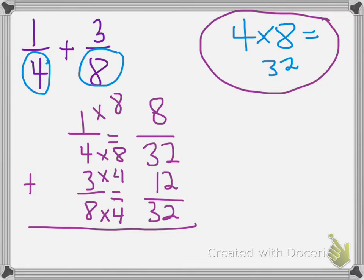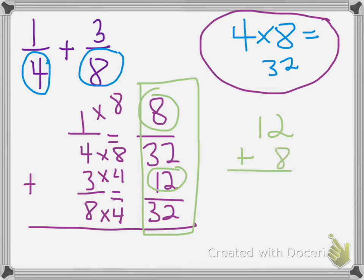So now I have two new equivalent fractions, eight over 32 and 12 over 32. And now I'm going to be able to add the two numerators. So 12 and eight, and that's going to give me 20. And I'm going to put my numerator of 20 over 32.